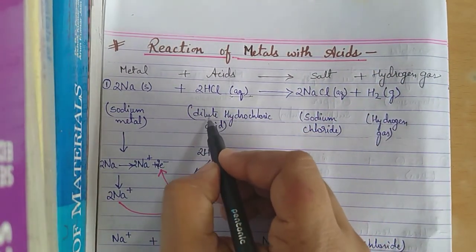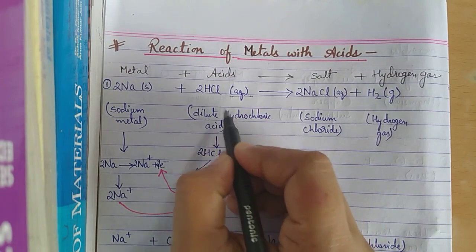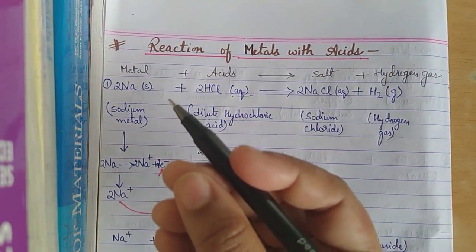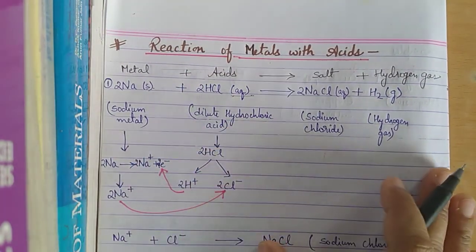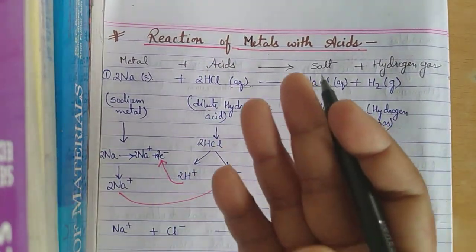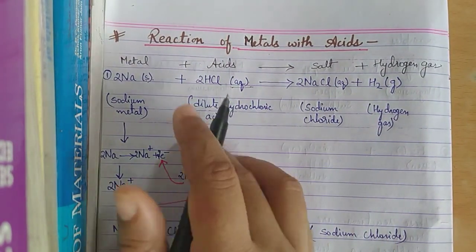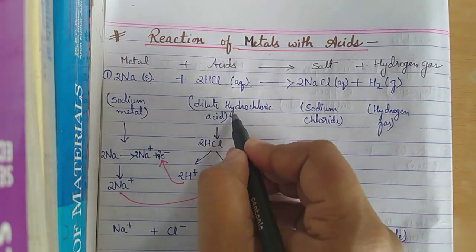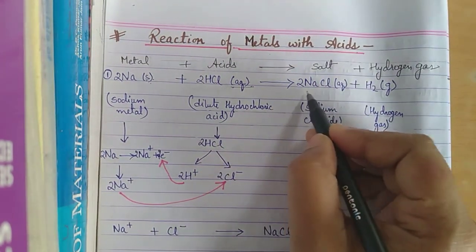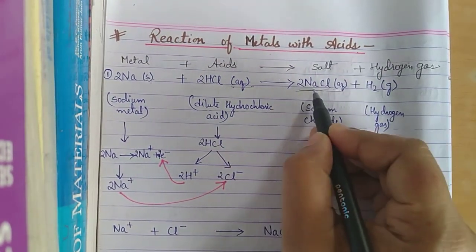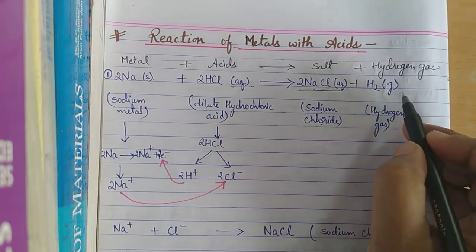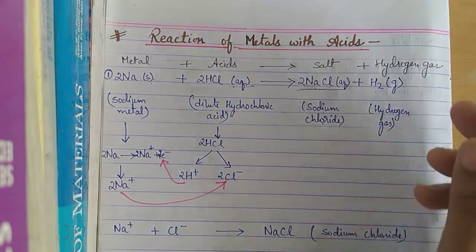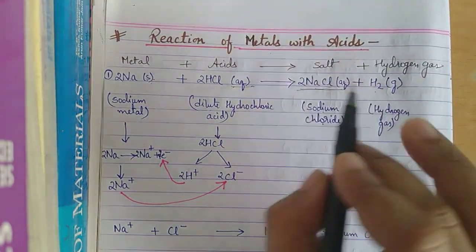This is dilute hydrochloric acid. 'S' in brackets means solid, so the sodium metal is solid. When it is added to dilute hydrochloric acid, it forms a salt — NaCl, sodium chloride — and H₂, hydrogen gas, is liberated. The 'g' in brackets stands for gas.